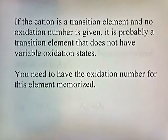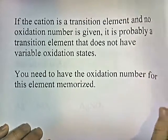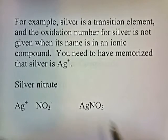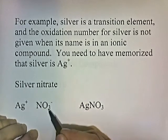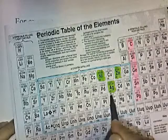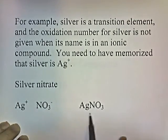If the cation is a transition element and no oxidation number is given, it's likely a transition element without variable oxidation states — you must have its oxidation number memorized. For example, silver is a transition element and you must know that Ag is always plus one. Silver nitrate: silver is Ag+, nitrate is NO3- — equal and opposite charges, so the formula is simply AgNO3.